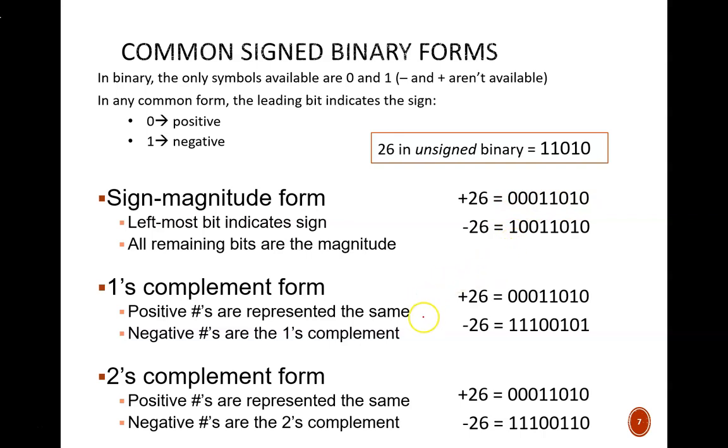The next two forms use the complement operations shown in the previous video. In both cases, begin with the code for positive 26. Then in ones complement form, apply the ones complement operation to obtain the code for negative 26. Similarly, in twos complement form, apply the twos complement operation to get the negative version of the number.